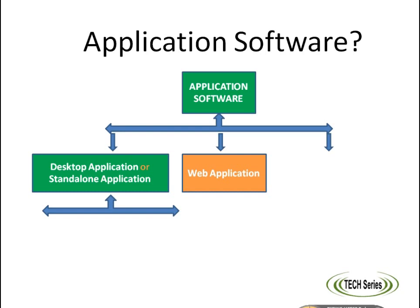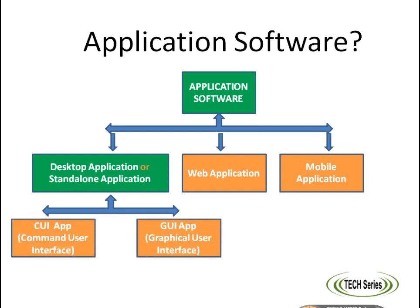Now, mobile applications are those applications which run on a mobile operating system like Android, iOS, Symbian, Bada, etc. Famous mobile applications include WhatsApp, UC Browser, etc. Now let's move to another section of software — system software.